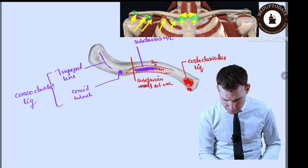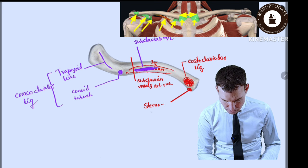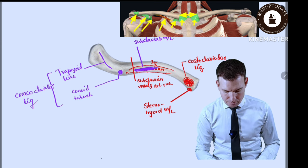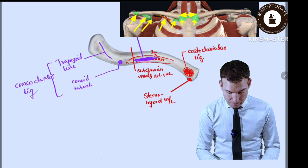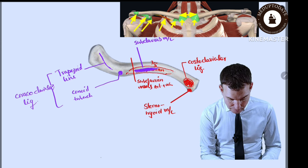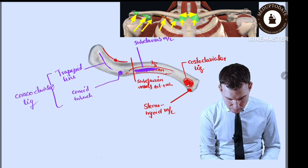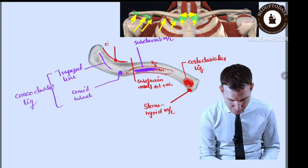At the medial end on the posterior surface, the sternocleidomastoid originates from this area. On the anterior border there is a deltoid tubercle, because this area is the origin of the deltoid muscle.